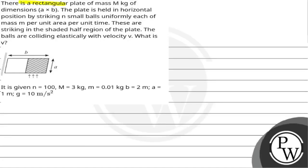Hello, this question reads that there is a rectangular plate of mass M with dimensions a into b. The plate is held in horizontal position by striking n balls, uniform each of mass m per unit area per unit time. These are striking in the shaded half region of the plate. The balls are colliding elastically with velocity v. It is given that n equals 100, M equals 3 kg, m equals 0.01 kg, b equals 2 m, a equals 1 m, g equals 10 m per second squared.